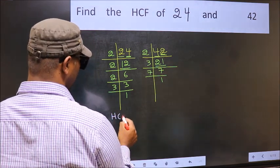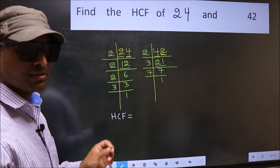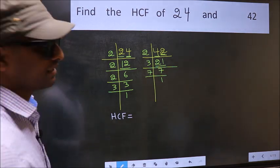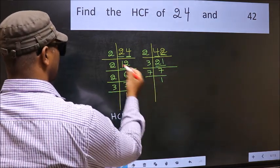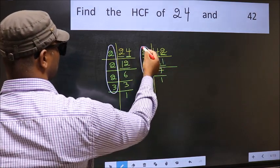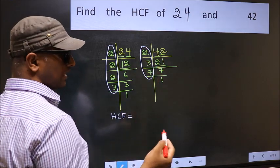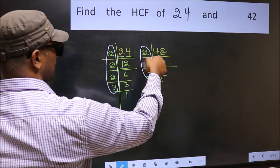Therefore our HCF is the product of the numbers which should be present in both places. That is here and also here. Here and here. So now let us find the numbers which should be present here and here.